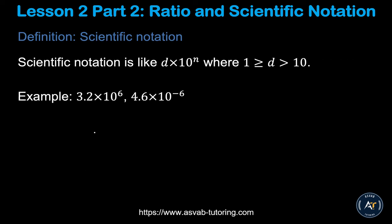The next topic is scientific notation. In science, we often deal with very large numbers, and scientific notation is a shorthand way to write them. The format is: a number times 10 to the power of some exponent. For example, 3.2 times 10 to the power of 6, or 4.6 times 10 to the power of negative 6.